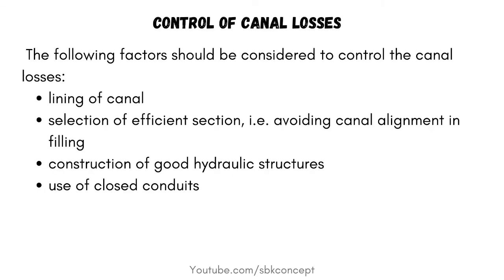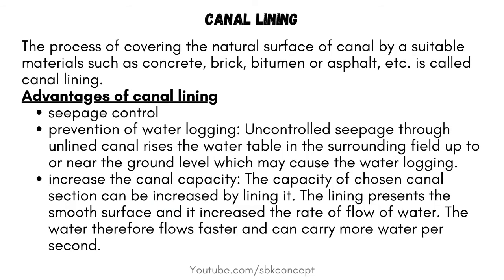Control of Canal Losses: The following factors should be considered to control canal losses — lining of canal, selection of an efficient section (avoiding canal alignment in filling), construction of good hydraulic structures, and use of closed conduits. Canal Lining is the process of covering the natural surface of the canal by a suitable material such as concrete, brick, bitumen, or asphalt. This is called Canal Lining.